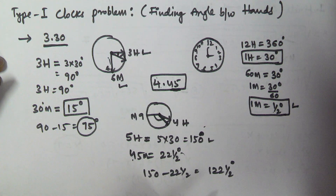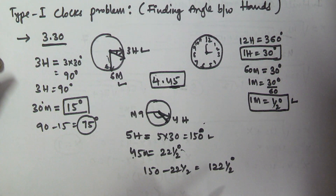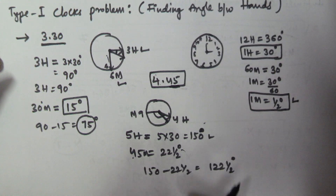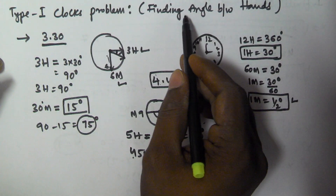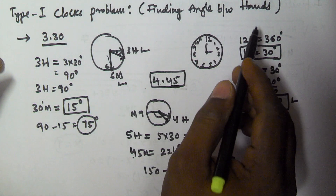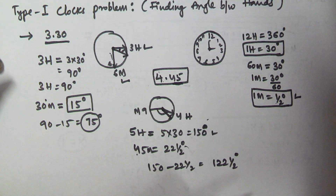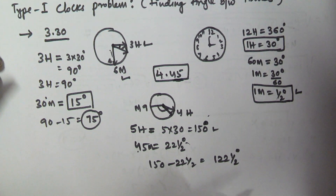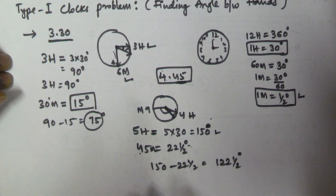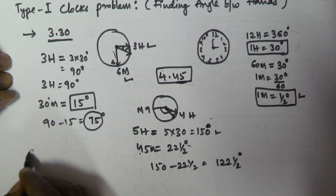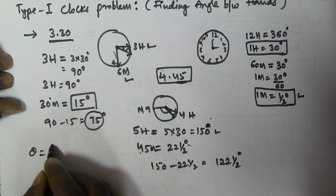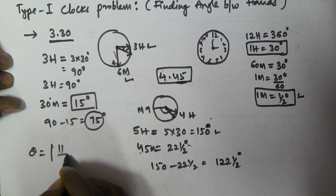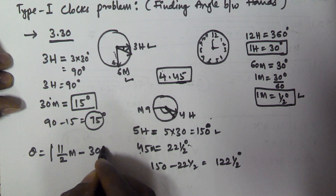This is how we can solve problems related to finding the angle between two hands. We also have a shortcut formula for solving these problems. The formula is: theta equals the absolute value of (11 divided by 2 times m) minus (30 times h).